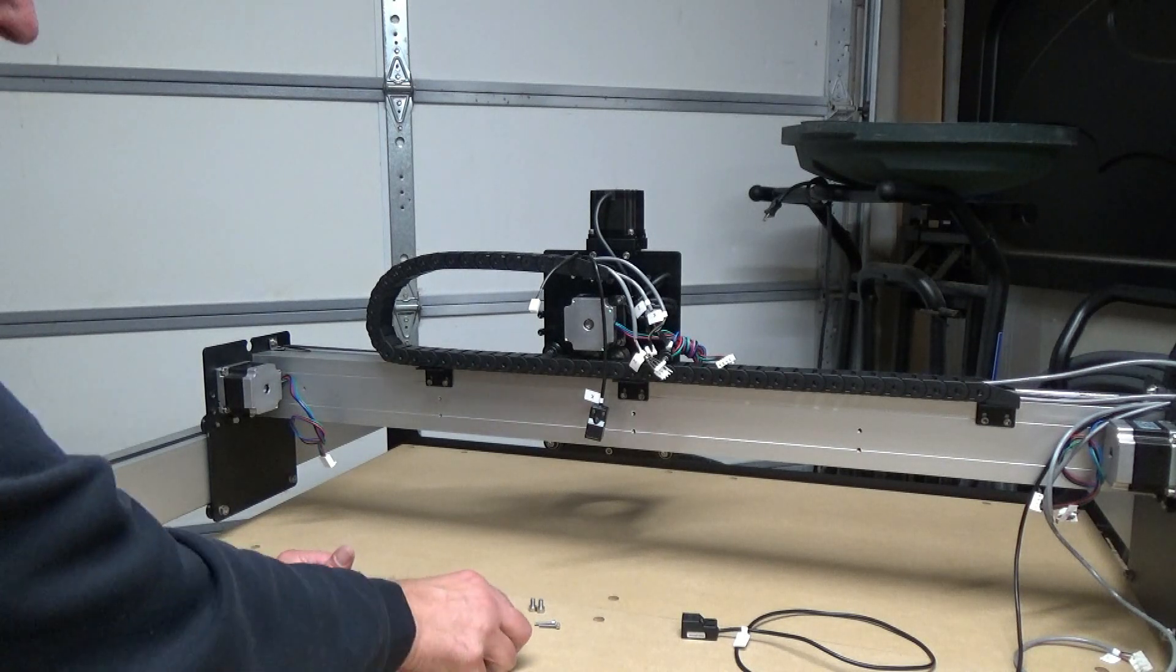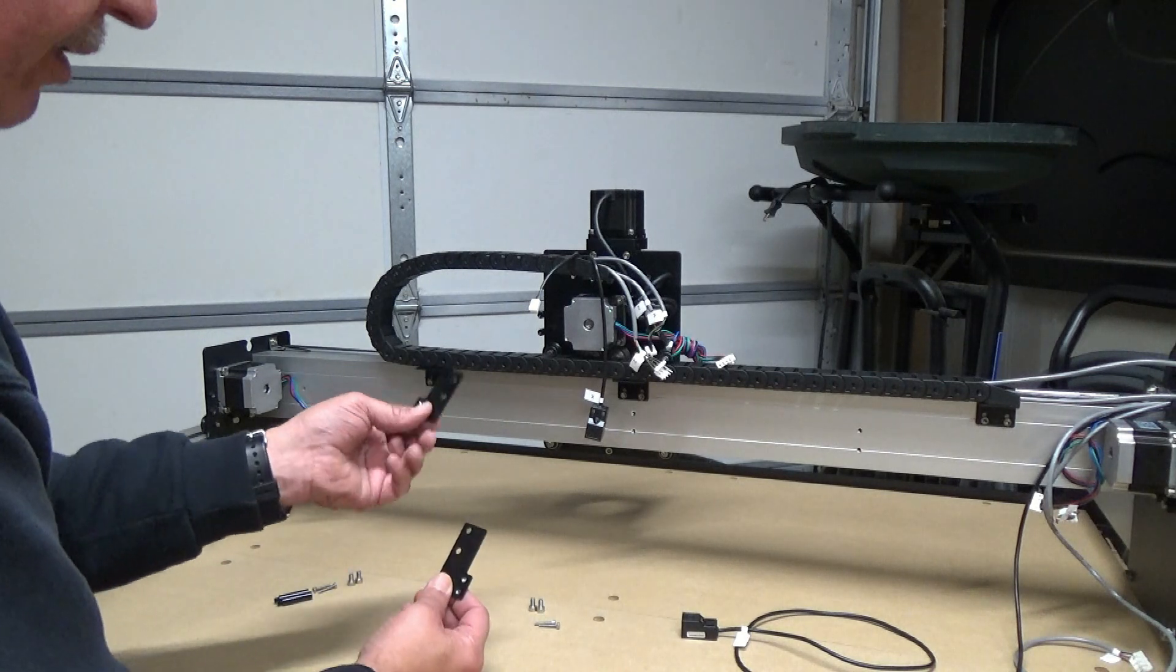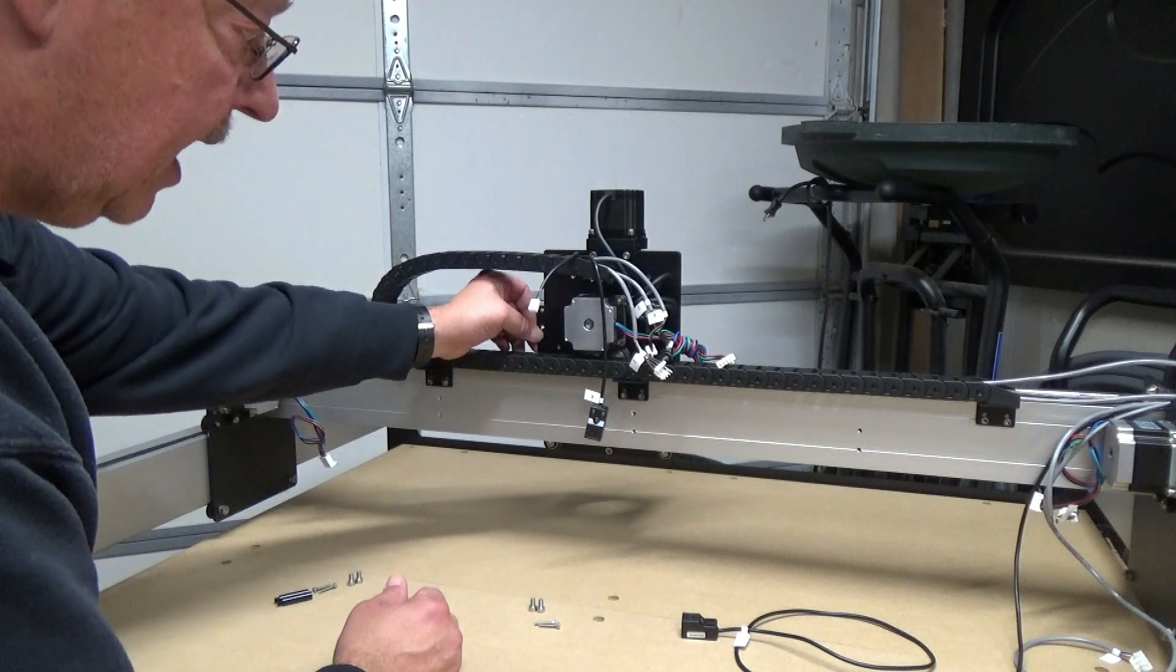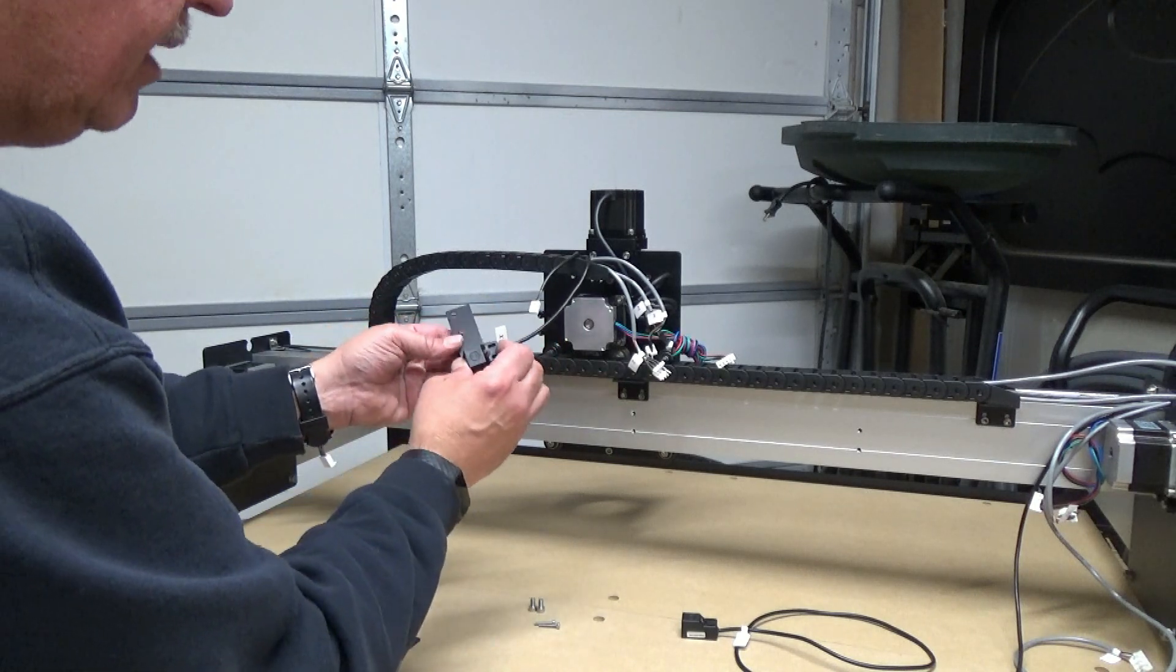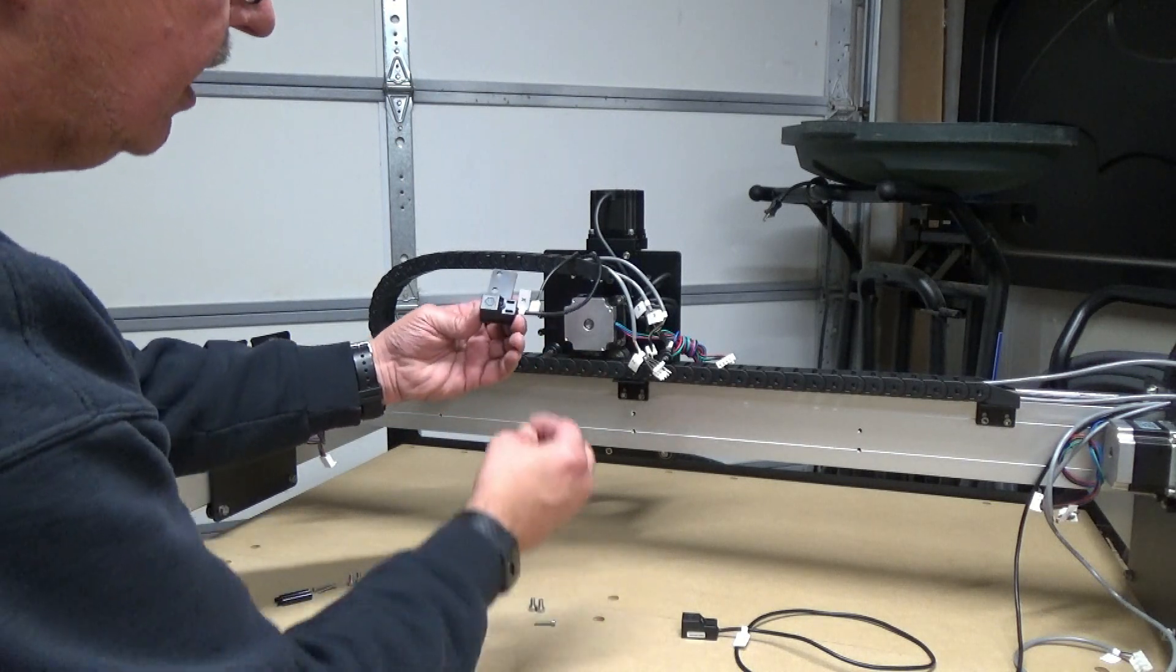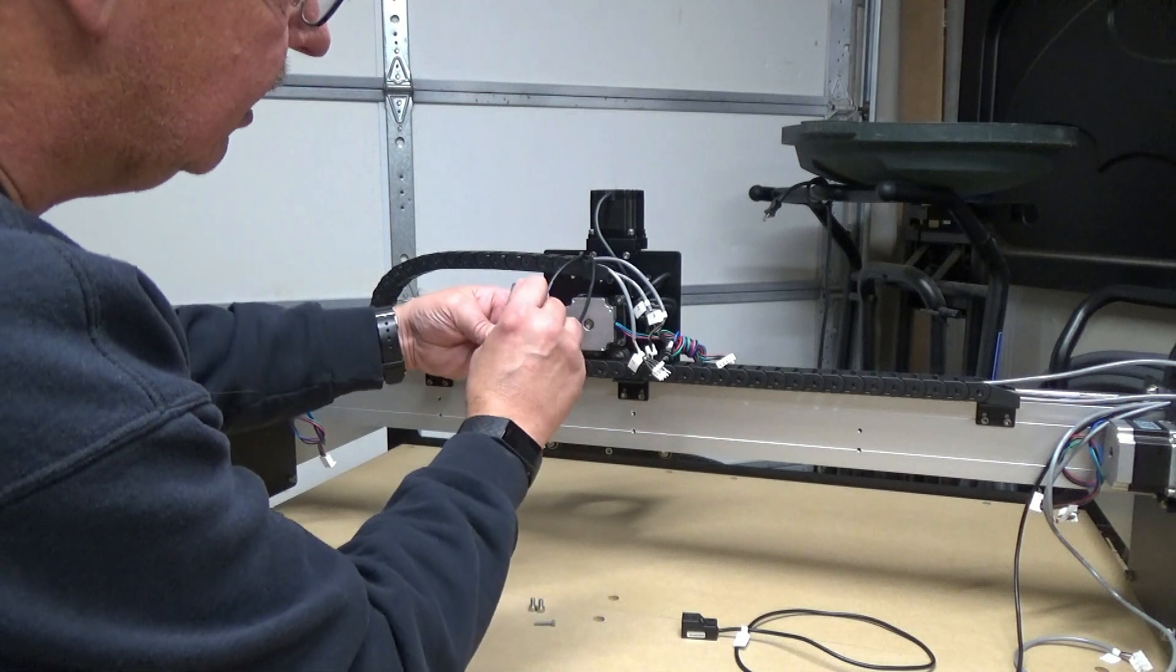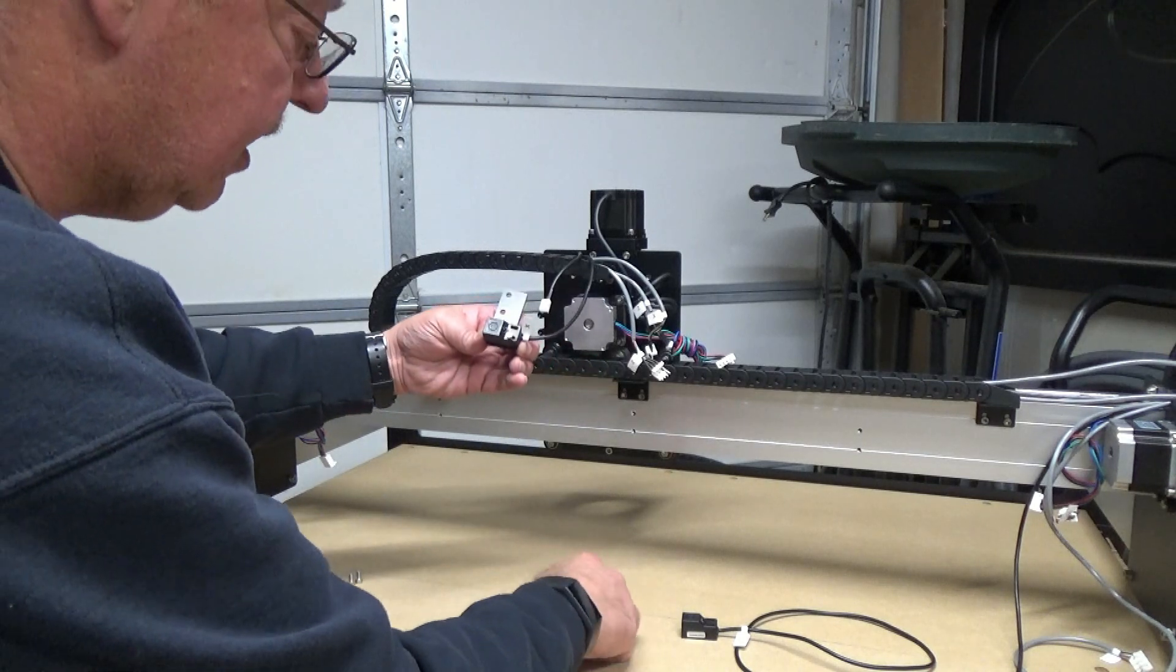So to install the limiting switches, there's two brackets. One goes on the Y2 axis arm and then this one here goes on the Z and there's a couple of outposts sticking out. All we have to do is install the limiting switch with the two screws provided and you want to keep the limiting switch flush with the front and back of the bracket just like so. So we'll go ahead and get those in there and tighten down and we can mount that onto the Z axis.